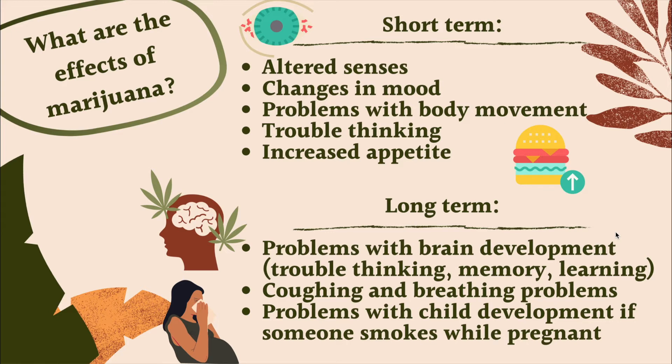You might also have problems with body movement — feeling sluggish, slowed down, like your body weighs a ton. Some people have trouble thinking and can't remember things as well as before. A lot of people get increased appetite and eat much more than usual. Long-term effects occur when someone uses marijuana every single day for long periods of time, causing serious damage, especially if you're very young.